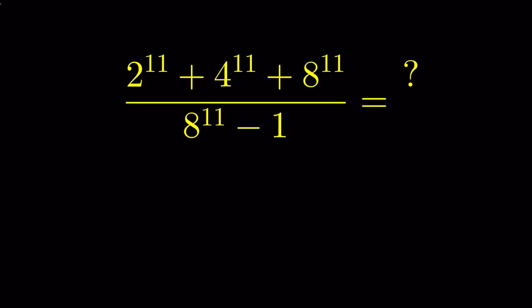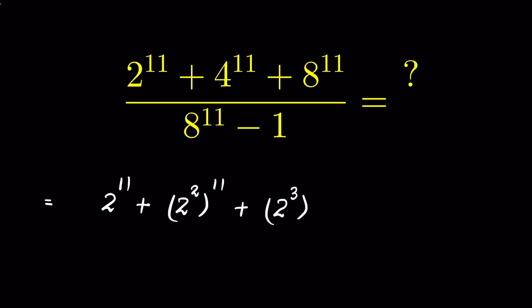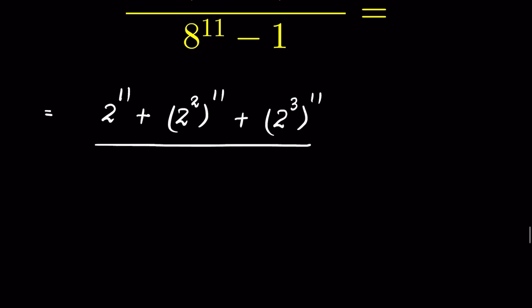We have to evaluate (2¹¹ + 4¹¹ + 8¹¹) / (8¹¹ - 1) without using a calculator. We can write 4 as 2² and 8 as 2³, so the numerator becomes 2¹¹ + (2²)¹¹ + (2³)¹¹ and the denominator becomes (2³)¹¹ - 1.